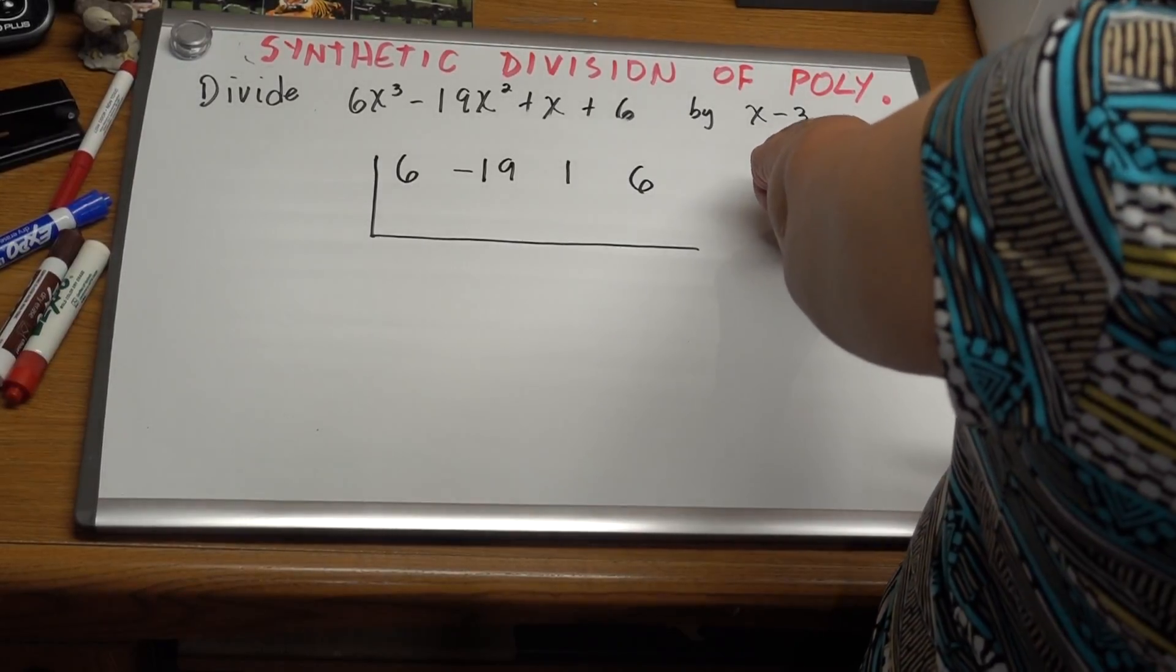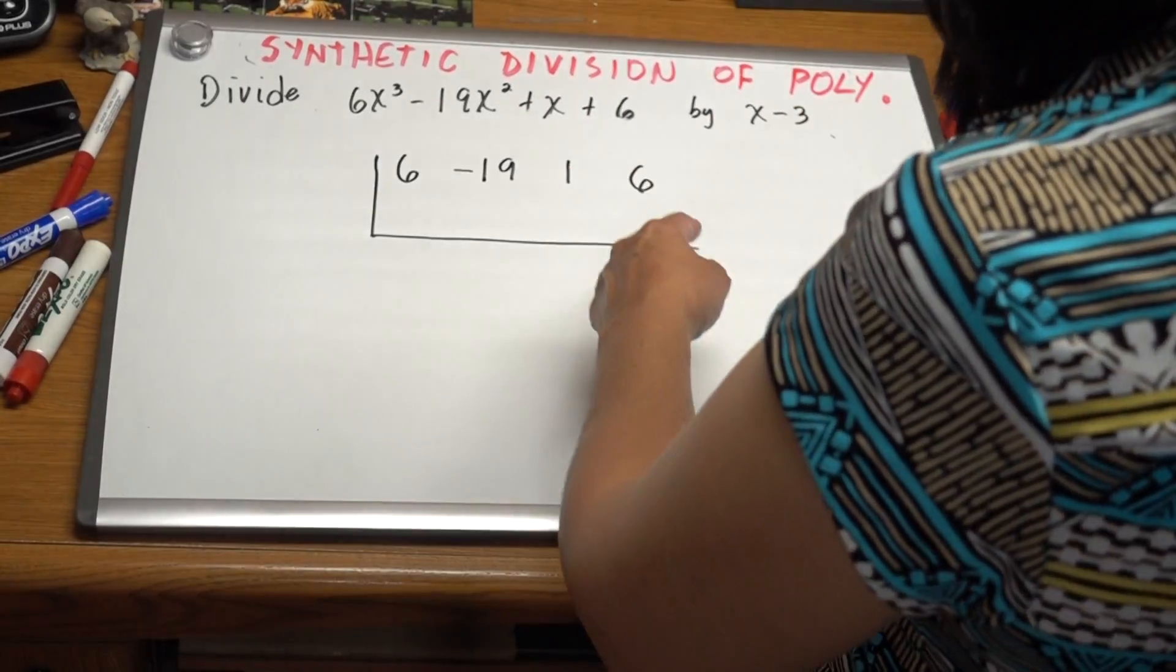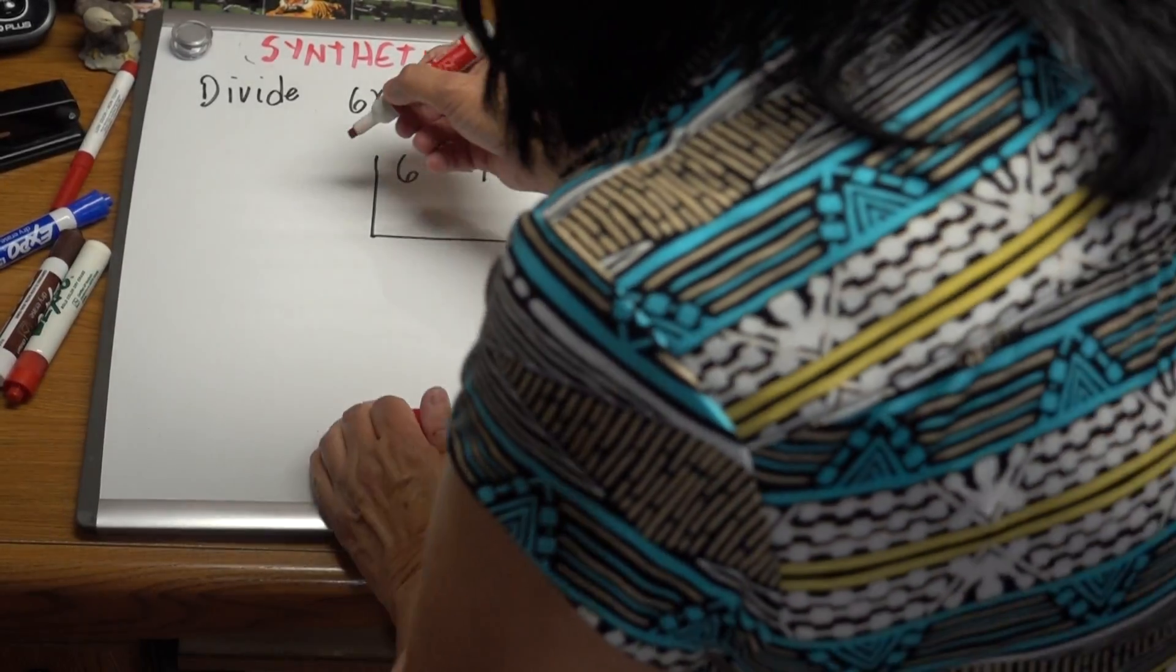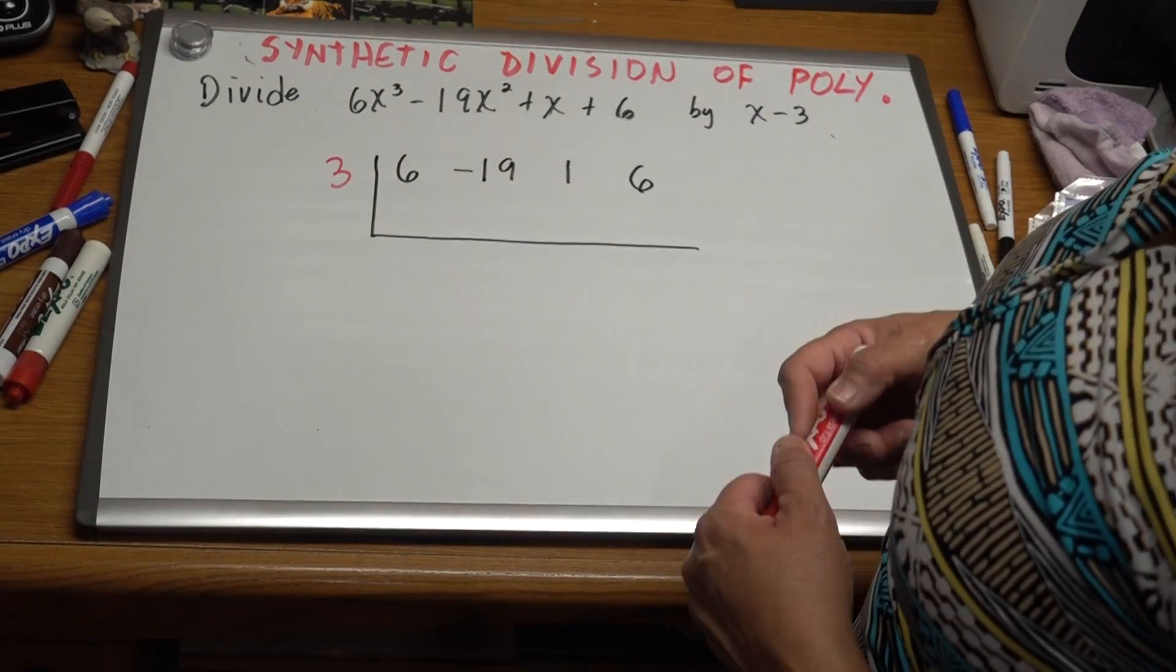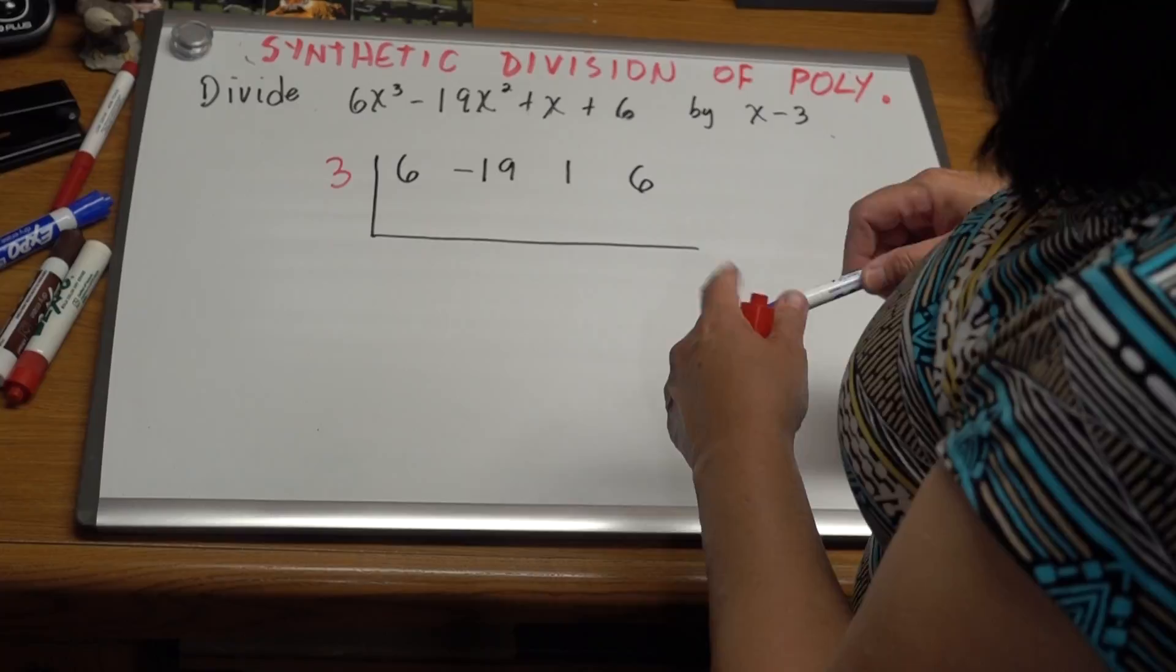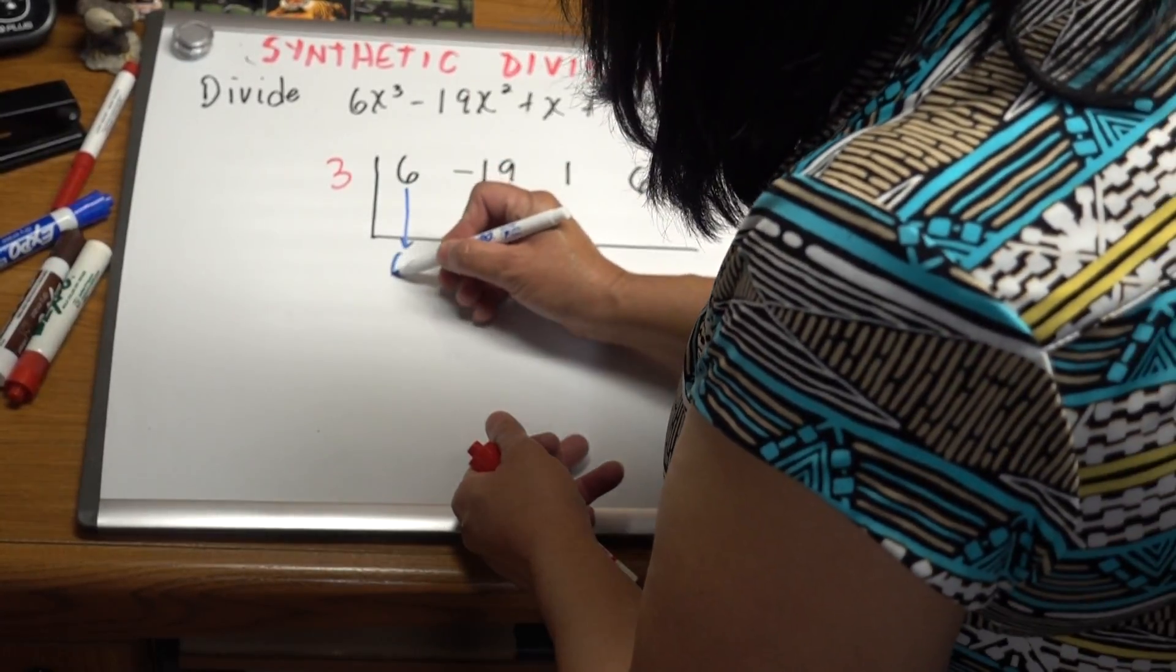So for the synthetic division, I am going to change the sign of negative 3. I'm going to put 3 right here. This is very easy. First step is you bring down this number right here. You bring it down. Copy here. This number is 6.